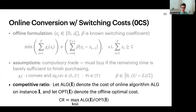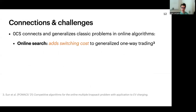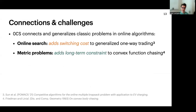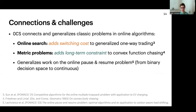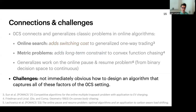We use competitive analysis: if ALG represents an online algorithm's cost on a valid instance and OPT represents the offline optimal cost on the same instance, the competitive ratio is defined as the maximum ratio over all instances. OCS has nice connections to broader tracks of work in online algorithms. In online search problems, OCS adds a switching dimension to the generalized one-way trading problem. On the other hand, OCS adds a long-term constraint to a special case of convex function chasing in one dimension. OCS also generalizes prior work on the online pause and resume problem by moving from a binary decision space to a continuous one. A challenge is that it's not clear initially how to design an algorithm that juggles all of these moving pieces.